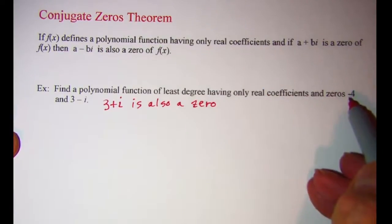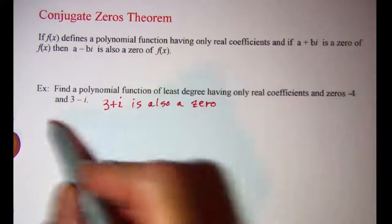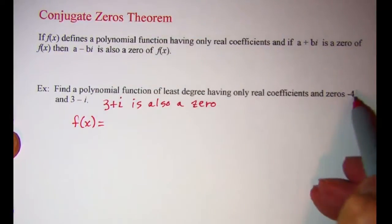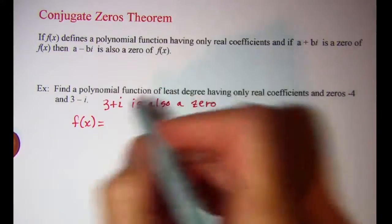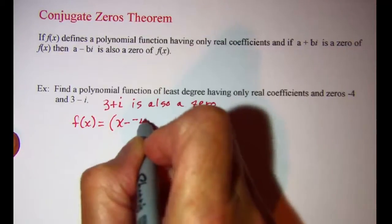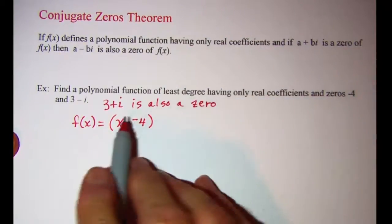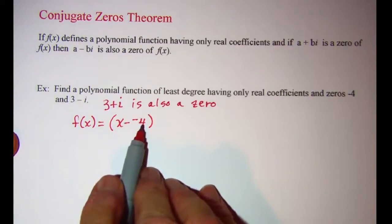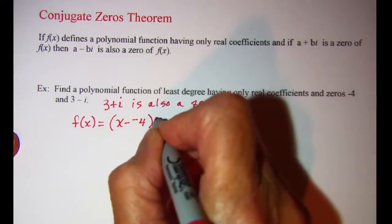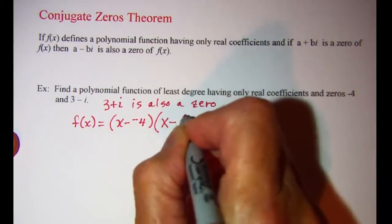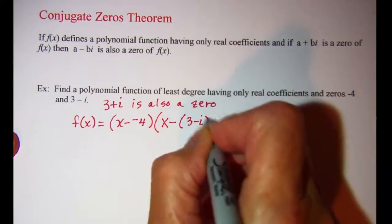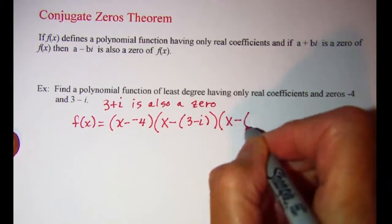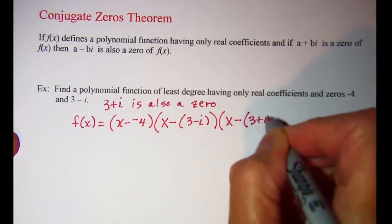So to get our function, we know that we have one, two, three zeros. Let's go ahead and write f of x equals. Now if negative 4 is a zero, that means x minus negative 4 is a factor — remember you always use x minus k as your factor. We also know that x minus 3 minus i is a factor, and x minus 3 plus i is a factor.